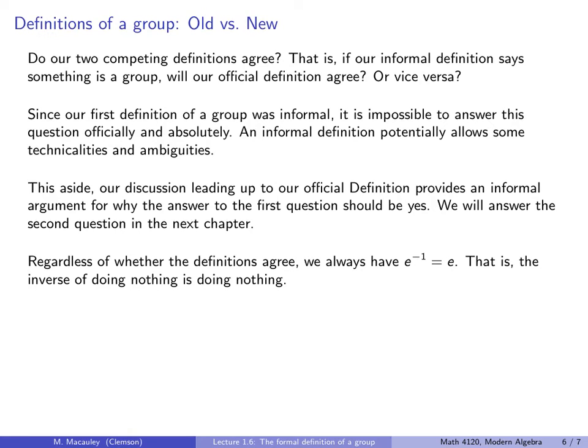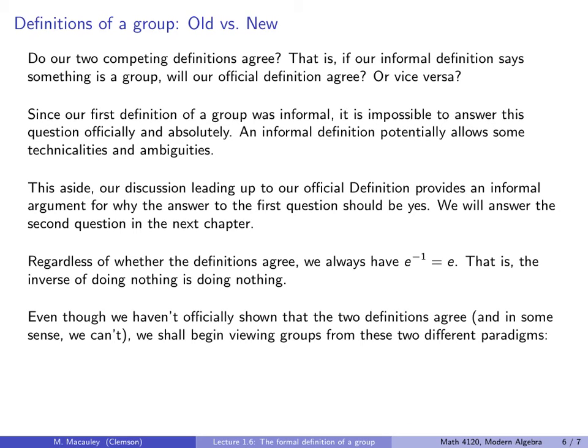And our second question, this is the vice versa part. If we have a group defined with our official definition, is it necessarily a group with the informal definition? We will answer that in the next chapter. So regardless of whether our definitions agree, we will always have that the inverse of the identity is the identity. In other words, the inverse of doing nothing is, of course, doing nothing. Even though we have not officially shown that these two definitions agree, and as I said, in some sense we can't, because there is ambiguity that is built into the first definition, we shall begin viewing groups from these two different paradigms. As a collection of actions, and as a set with a binary operation.